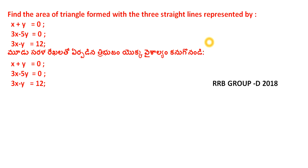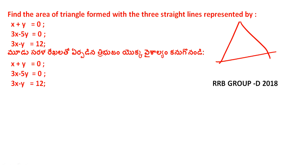Next question: this is a question that came from Group D. There are many such questions. Here we find the area of a triangle formed by three lines: equation 1 is x + y = 0, equation 2 is 3x − 5y = 0, and equation 3 is 3x − y = 12.